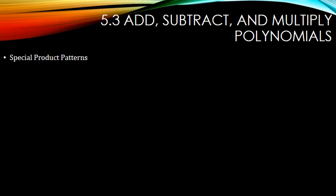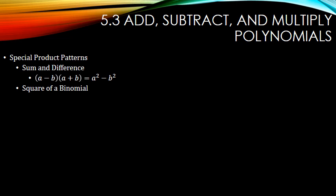There are some special product patterns. We have the sum and difference: (a minus b)(a plus b) equals a-squared minus b-squared. Square of a binomial: (a plus or minus b)-squared equals a-squared plus or minus 2ab plus b-squared. If you use the plus in the first part, you use the plus in the second part; if you use the minus in the first part, you use the minus in the second part.